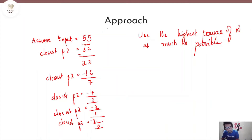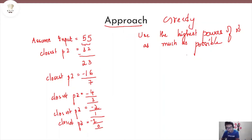Now let us look at the approach that can be used to solve this problem. We are going to use a greedy approach that takes the highest power of 2 and tries to use it as much as possible in order to reduce n and achieve the minimum number of menu items. I like to think of this like having a huge pizza that you want to finish as fast as possible — you start taking big bites so the pizza gets smaller and smaller until you are left with nothing.